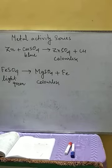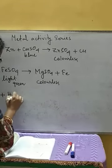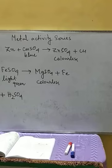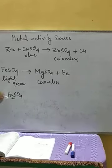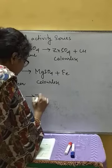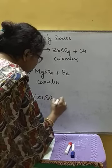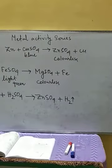Next we have a well-known reaction to produce hydrogen gas — the reaction between zinc and H2SO4, or we can use HCl as well. As zinc is at a higher position than hydrogen, zinc can replace hydrogen from its compound. So we are going to get zinc sulfate ZnSO4 plus hydrogen gas. This is a very useful reaction to produce hydrogen in the laboratory.